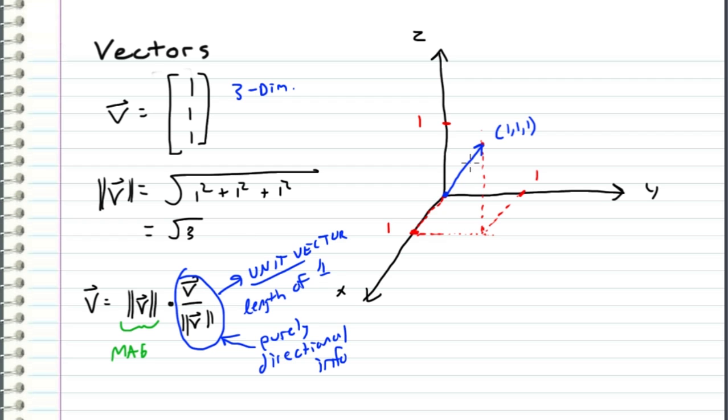So if we wanted to compute the unit vector, or directional information, of this vector v, what we would do is we would take v and divide it by its magnitude. We would have 1, 1, 1, and we would divide it by its magnitude. So whenever I divide or multiply by a vector, it applies that operation to each component. So what I would get for the unit vector of v is 1 over root 3, 1 over root 3, 1 over root 3. Where this represents the directional information of the vector, and this represents the magnitude.